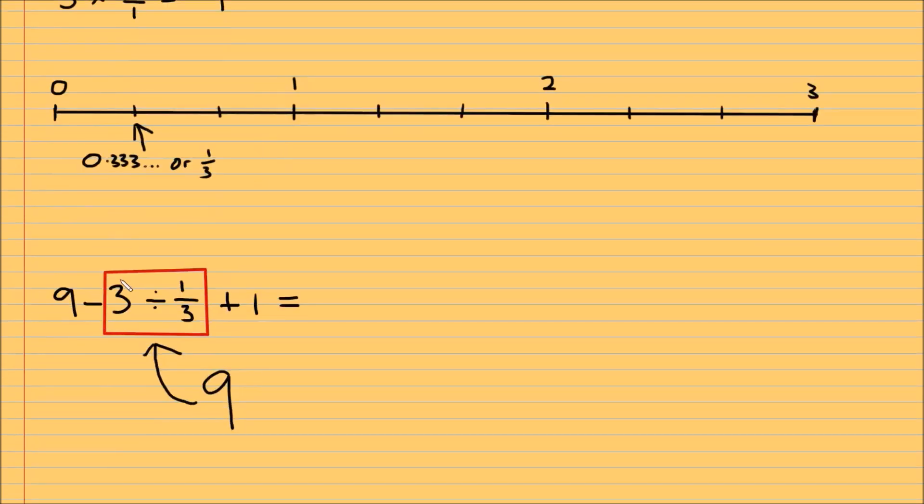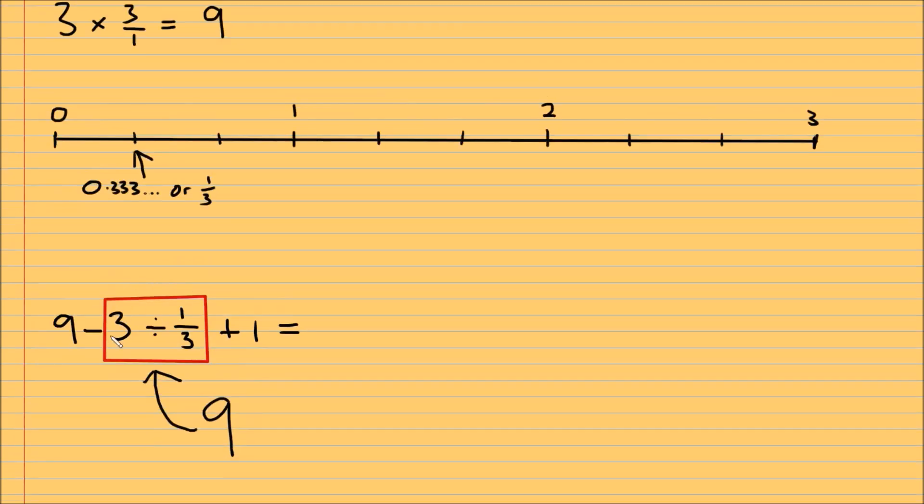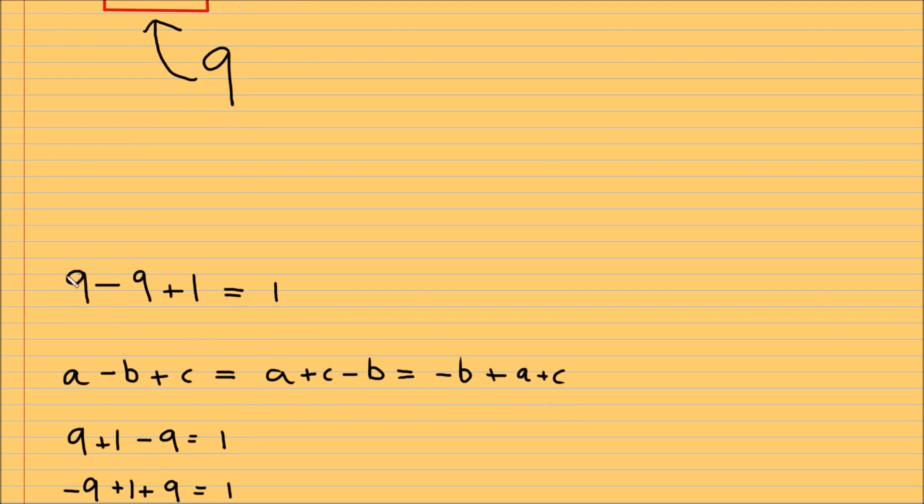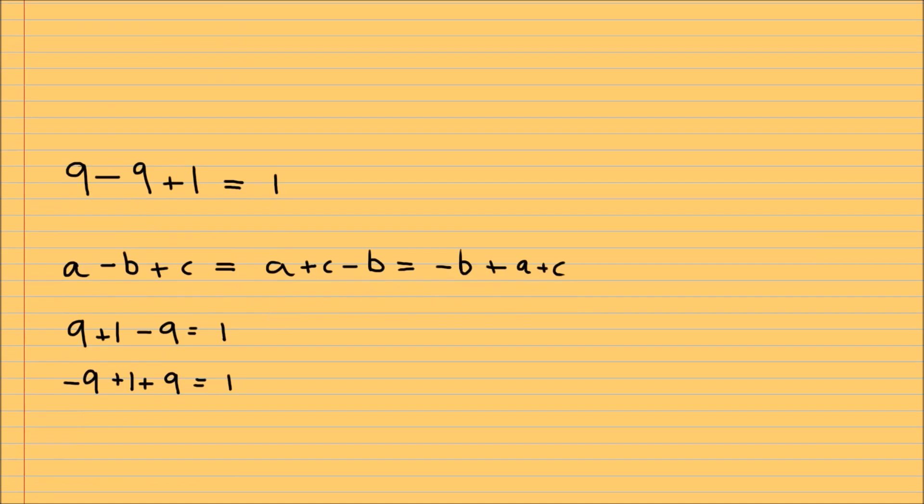Okay, so since we do the red part first and not 9 takeaway 3, and we've worked this red box out here to be equal to 9, we just put 9 into this. And from there you get 9 minus 9, because there's a minus there, plus 1. And we can work this out: 9 minus 9 is 0, plus 1 is equal to 1. And that is the answer that we are getting.